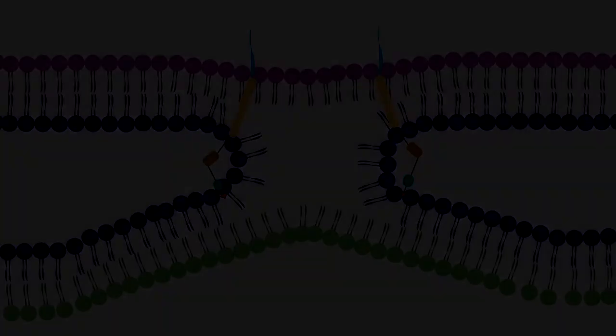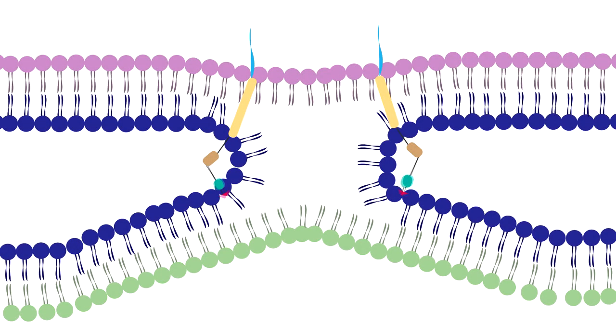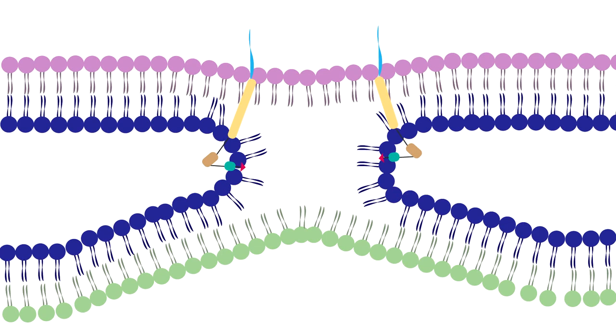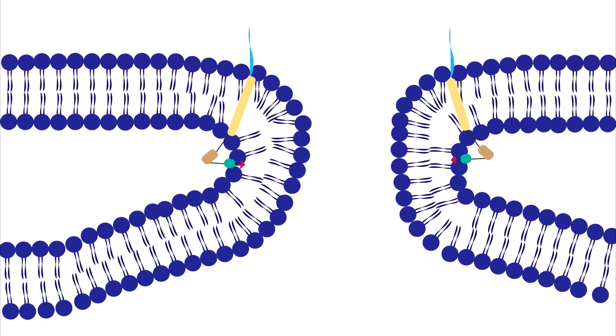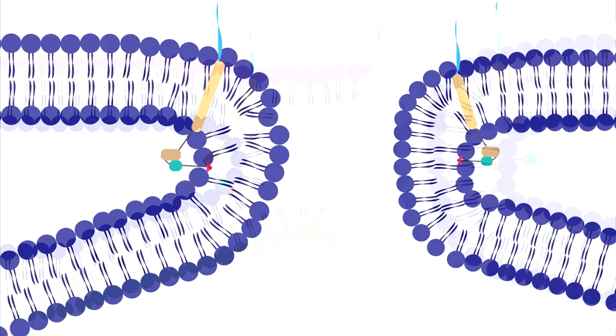The HR1 and 2 infoldings form a 6-helix bundle determining the two membranes to come together and fuse, inducing a stable post-fusion state. A pore is formed through which the genetic material of the virus is inserted into the target cell.